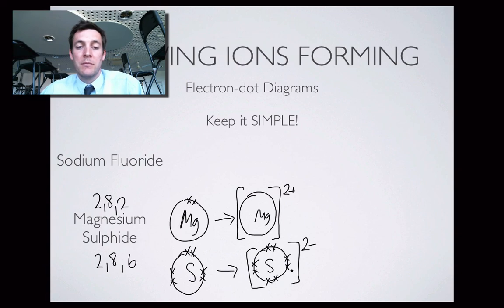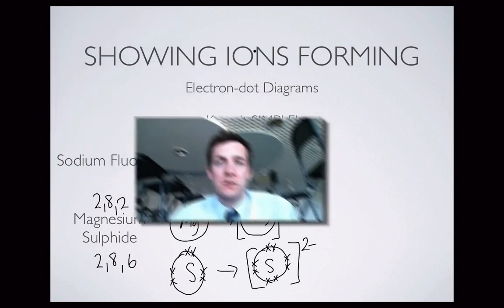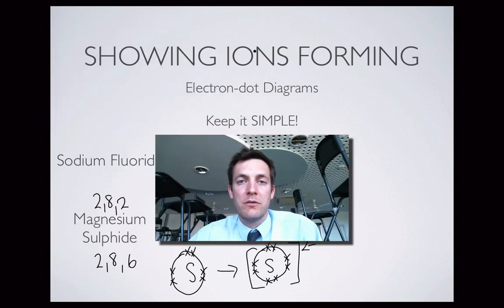Pretty simple really. You should be able to do it for any combination of positive and negative ions. So a good place to go next would be the film about naming ionic compounds. And that basically uses the ion list. So it'd be quite good to have that handy when you're doing it because you can see what we're referring to.